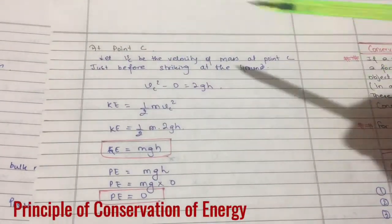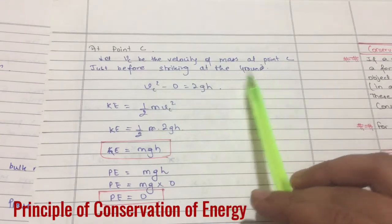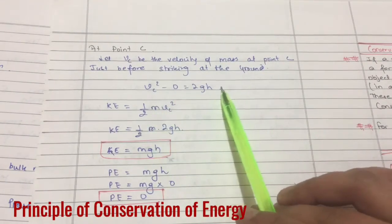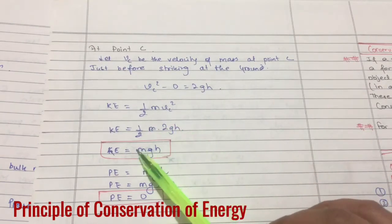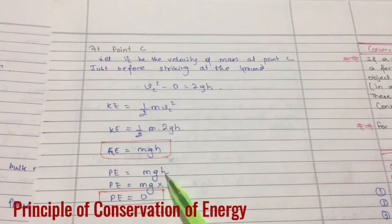Now we will see at point C what happens. Point C is where the body is in the ground. Velocity of the mass at point C just before striking the ground: v squared equals 2gh. Kinetic energy is half mv squared equals mgh. Potential energy at height zero is mg into zero, that is zero. Total energy will be mgh.